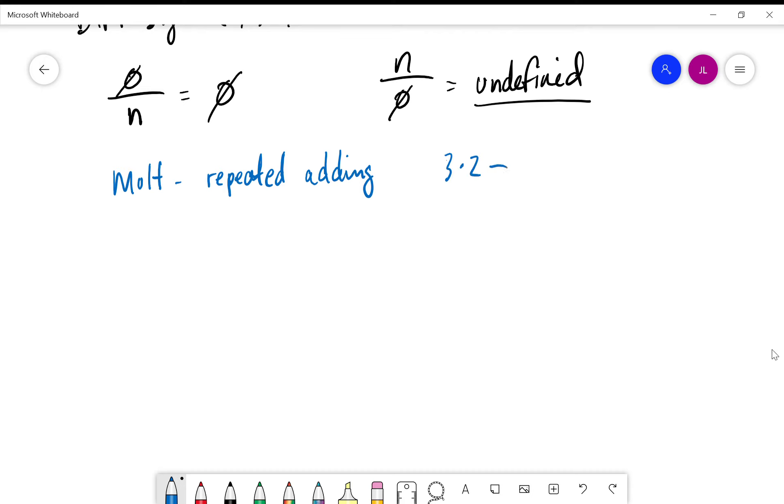Division, however, is repeated subtraction. Because of this, the most important thing we can think of here regarding zero in division is that we have repeated subtraction.